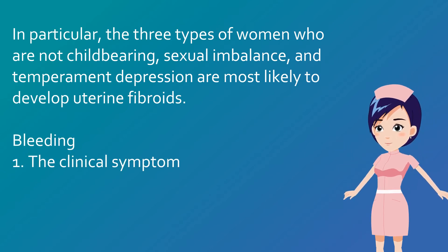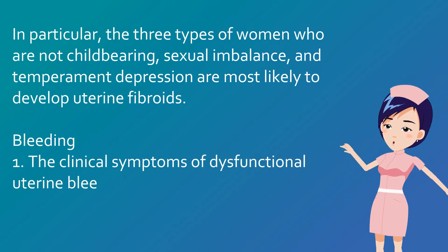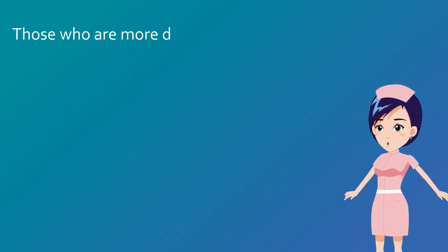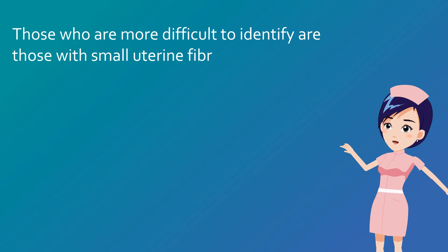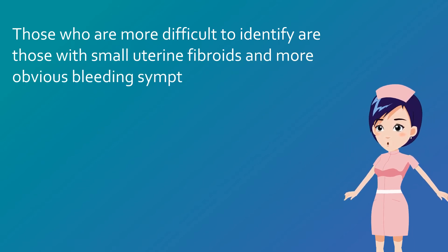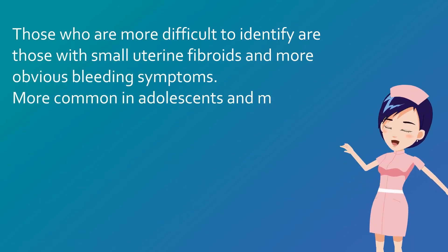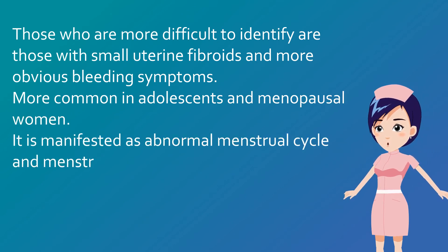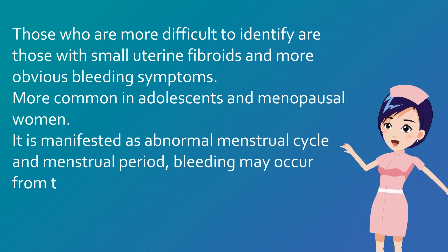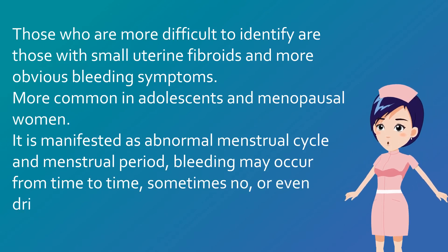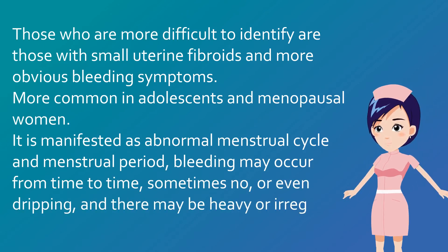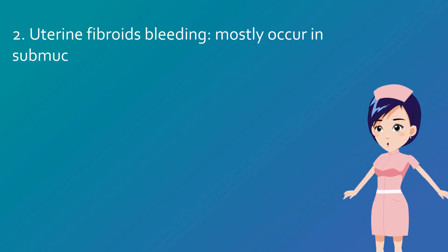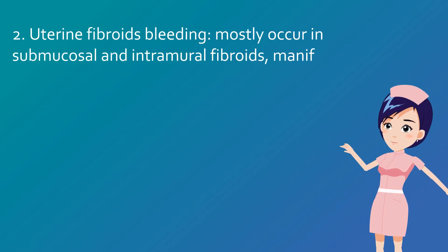The clinical symptoms of dysfunctional uterine bleeding are similar to those of uterine fibroids, and distinguishing them is more difficult when uterine fibroids are small but bleeding symptoms are obvious. This is more common in adolescents and menopausal women, manifested as an abnormal menstrual cycle with bleeding occurring from time to time, sometimes absent or even dripping.